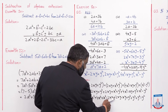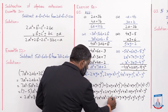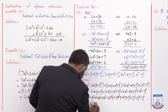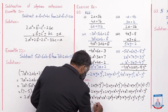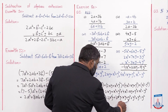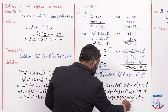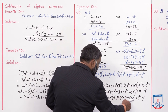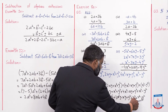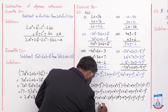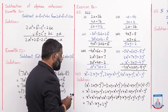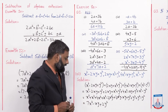Minus 2xy + 2xy cancel ho jaega, minus xy. Isi tarah plus y² + y² = 2y², plus y² = 3y², minus y² = 2y². To yeh iska final answer aajega: 7x² - xy + 2y².